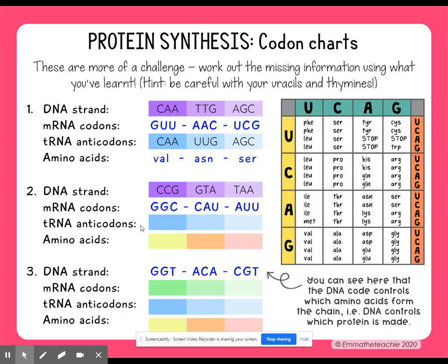Now we're going to figure out the anticodons. They're going to look very similar to the DNA strand, only wherever you see a T, it's going to be U instead. So we've got CCG again, then GUA, and then UAA.